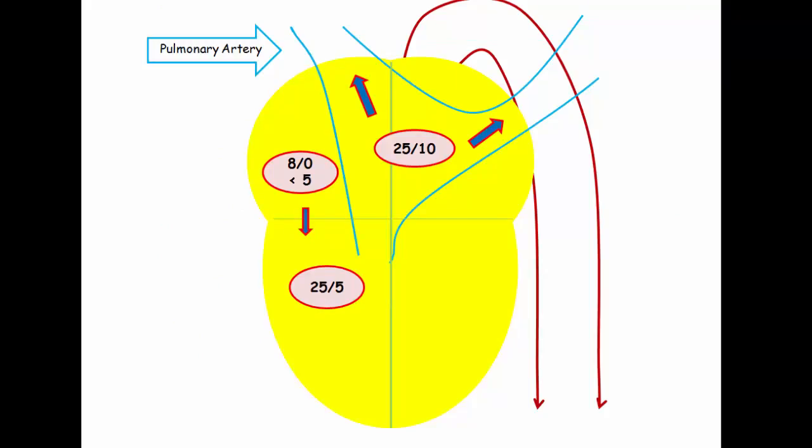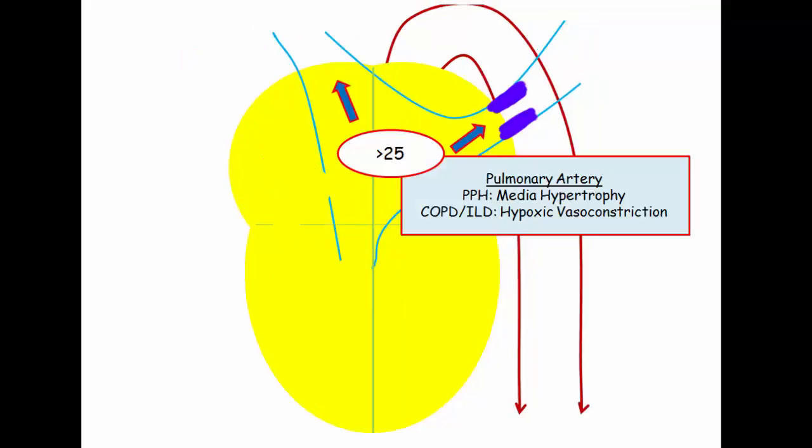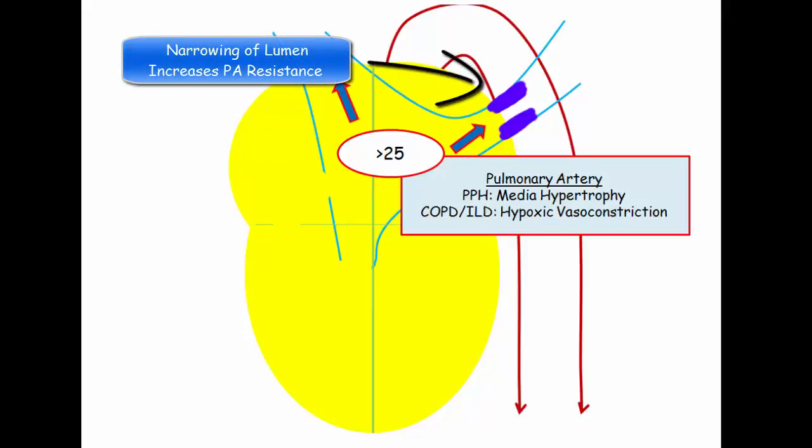Shown in this diagram are the normal right-sided pressures. Low pressures are noted in the atrium, right ventricle, and pulmonary artery. The first question to resolve is the physiologic basis for the elevated pressure seen in pulmonary hypertension. We can raise pulmonary artery pressures by increasing arterial resistance, and in fact this is exactly what occurs in two conditions: primary pulmonary hypertension and hypoxic vasoconstriction.